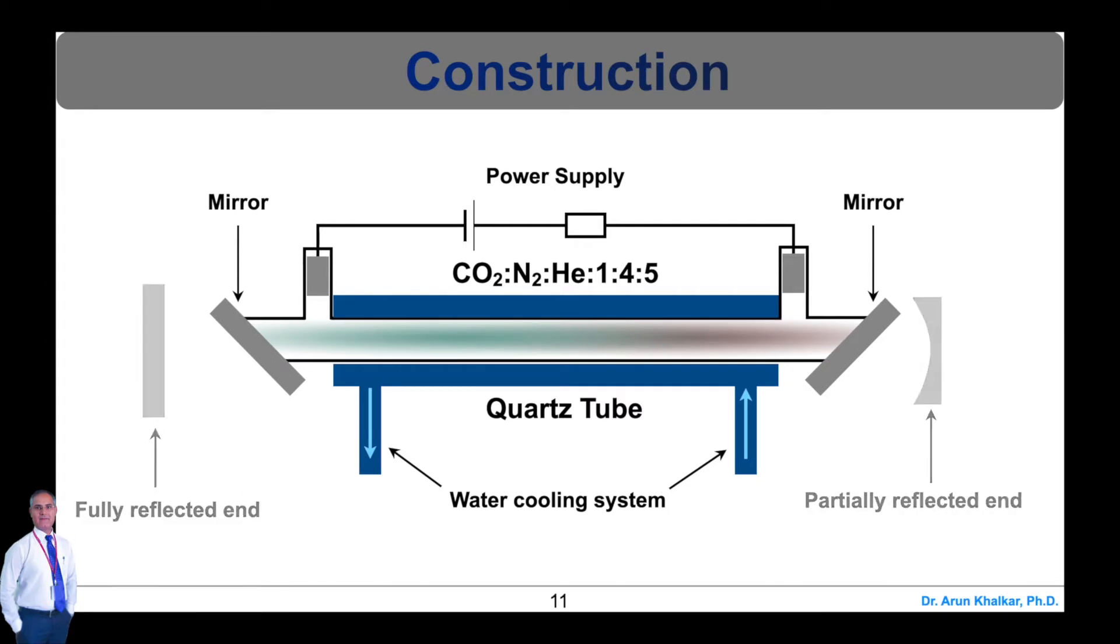The back and front ends of the quartz tube are fully reflected and partially reflected respectively to get laser output. Atoms are excited by AC or DC electrical discharge. The CO2 molecules are active centers where N2 atoms help CO2 molecules in achieving population inversion.